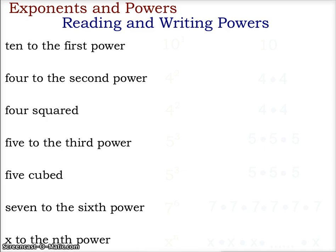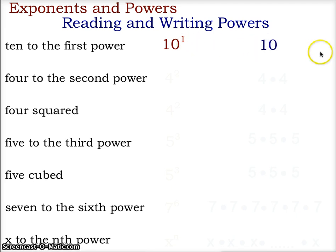In our first example, 10 to the first power — 10 is what is called our base, and the power is our exponent. So our example here is 10 to the first power. In this case, we are going to multiply one 10, and one 10 would give us a value of 10.